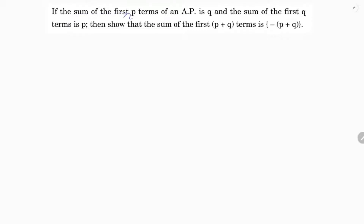If the sum of the first P terms of an AP is Q and the sum of the first Q terms is P, then show that the sum of the first P plus Q terms is minus of P plus Q. Here, sum of P terms is Q and sum of Q terms is P.